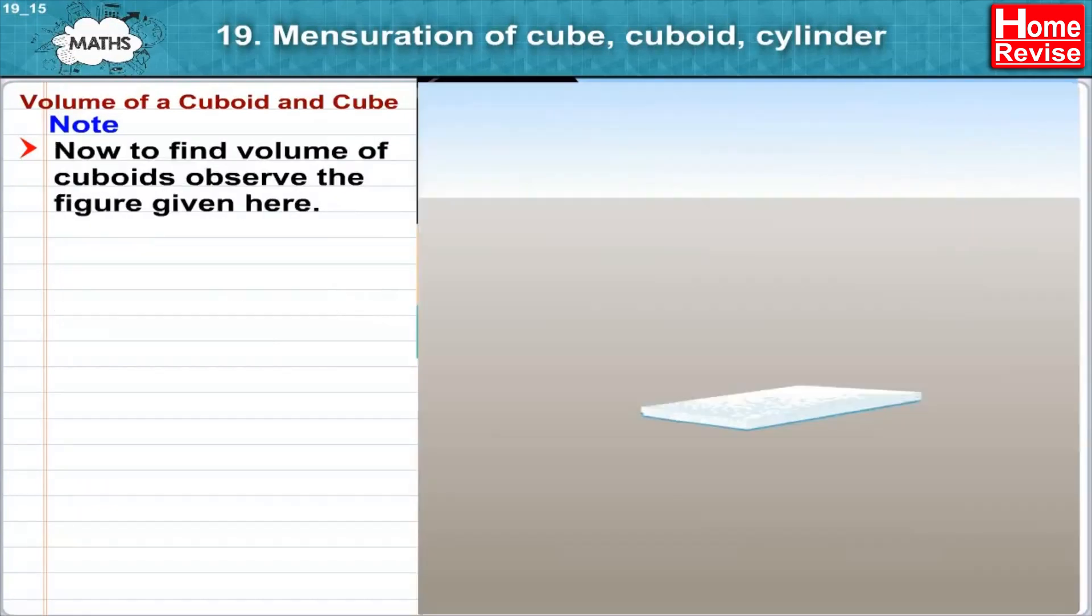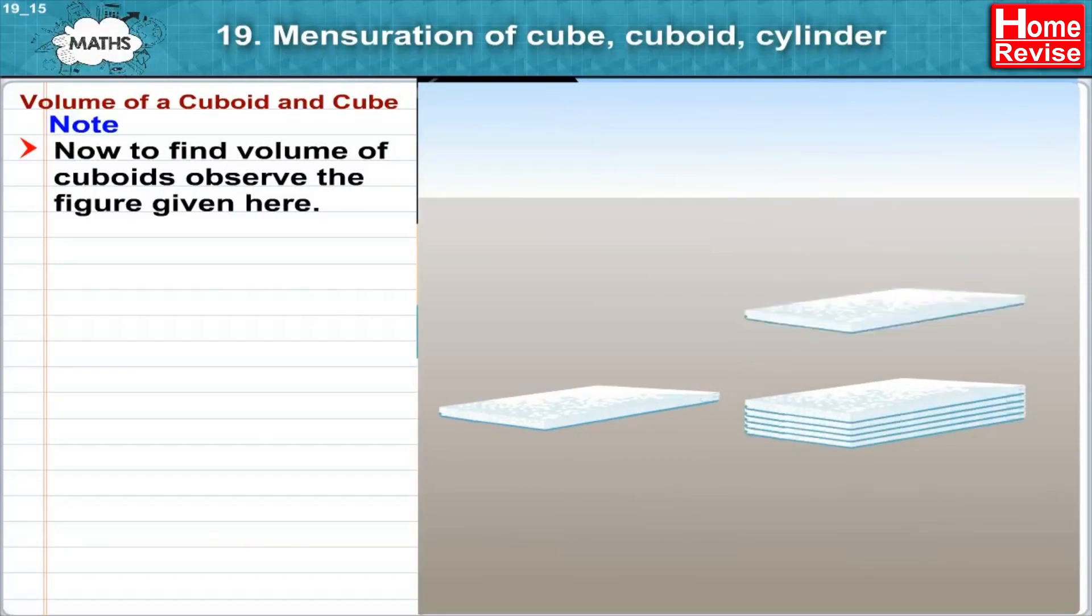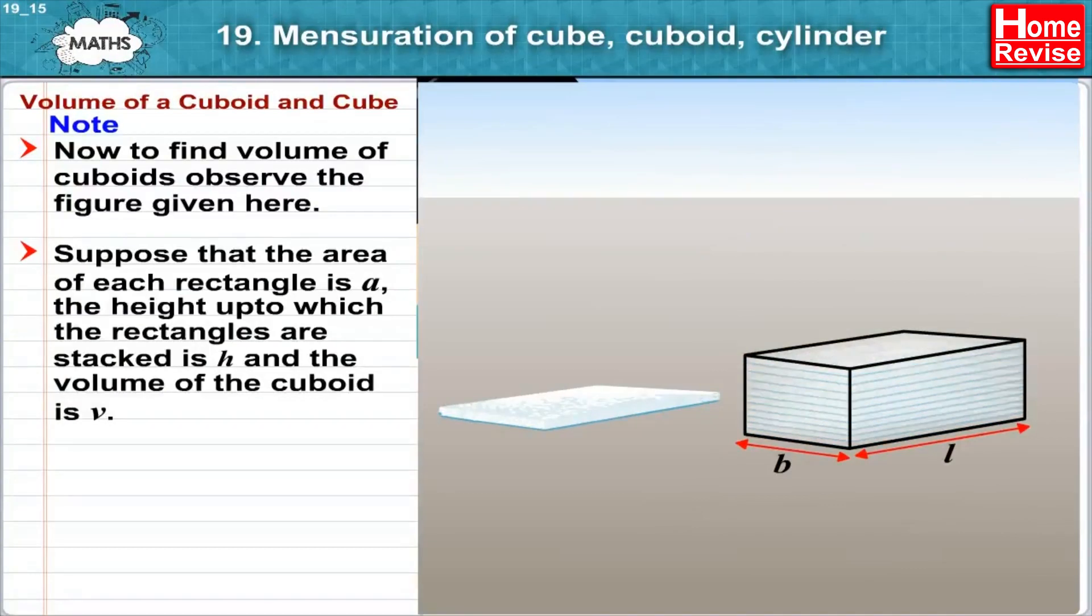Now, to find volume of cuboid, observe the figure given here. Suppose that the area of each rectangle is A, the height up to which the rectangles are stacked is H, and the volume of the cuboid is V.